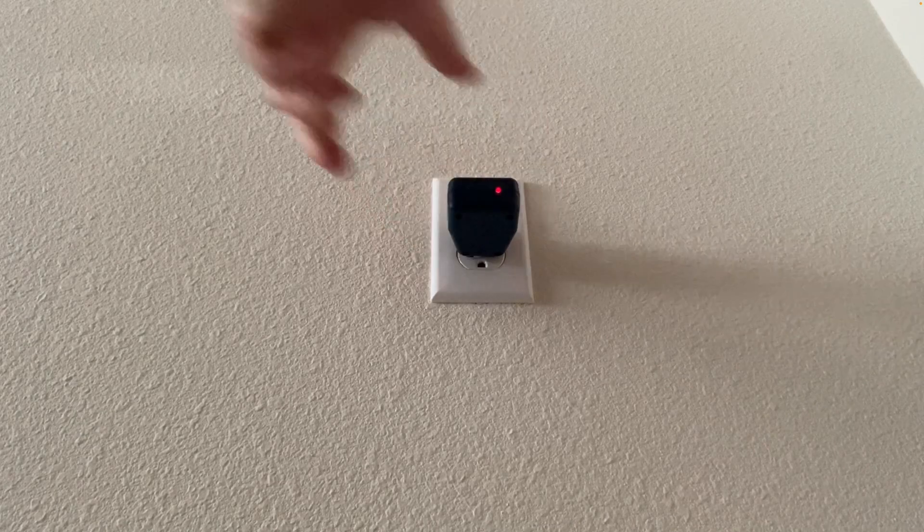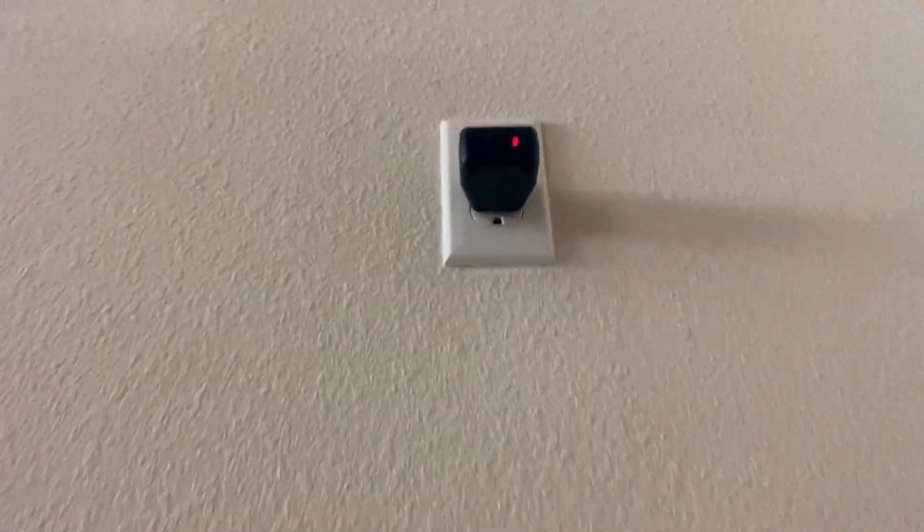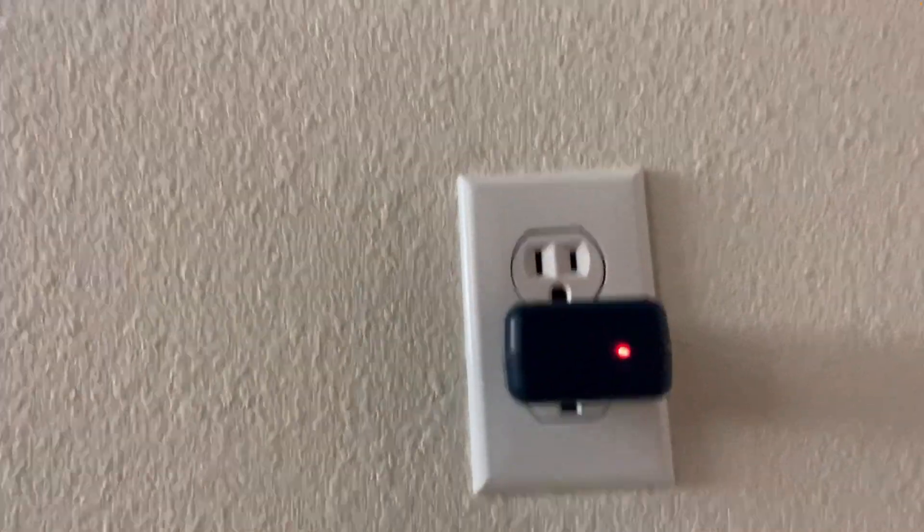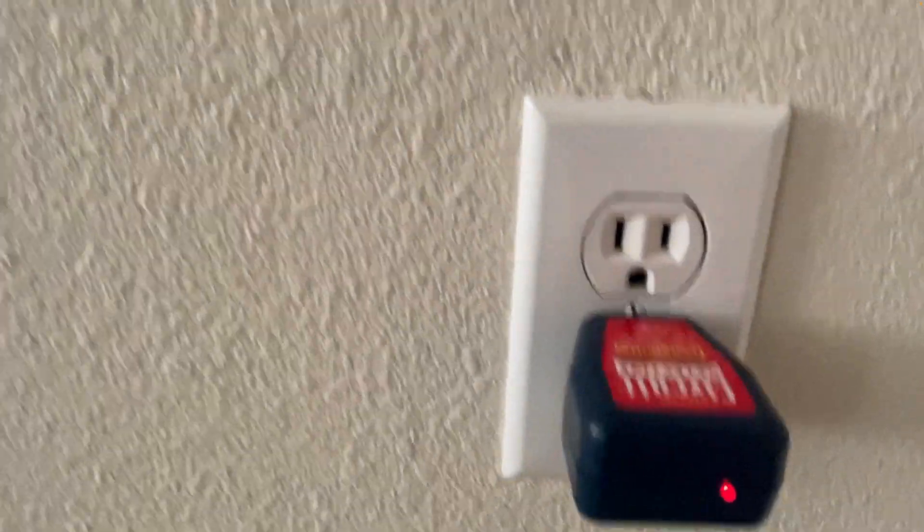We'll get started by finding the breaker for this existing outlet that we're going to tie into and ensure we turn the power off first.